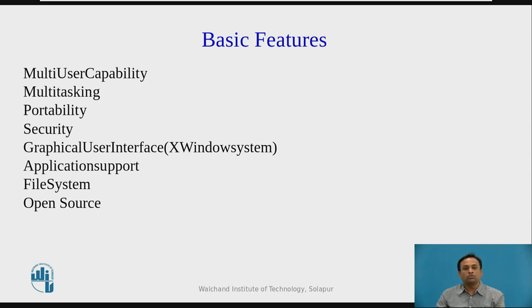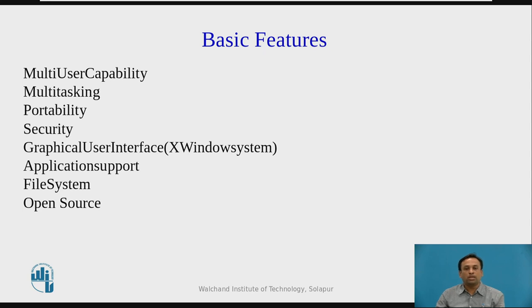Next is the graphical user interface, the X-Windows system. Linux is a command line based OS but it can be converted to a GUI by installing the appropriate package. Application support — it has its own software repository from where users can download and install many applications. Next is the file system, which provides a hierarchical file system in which files and directories are arranged. Finally, Linux is open source — the Linux code is freely available to all and is a community-based development project.